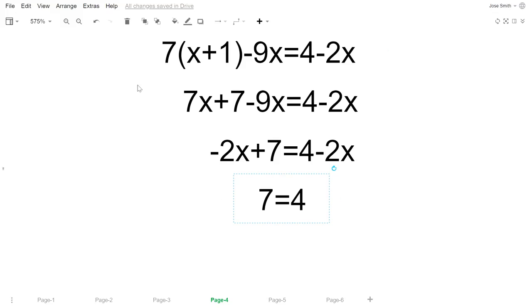So when you get something like this, it means that there's no solution to your equation. There's no value for x that you could plug in this equation that would have both sides equal to each other. That's why you're left with 7 equals 4. So when you're left with something like this, it means that there is no solution.